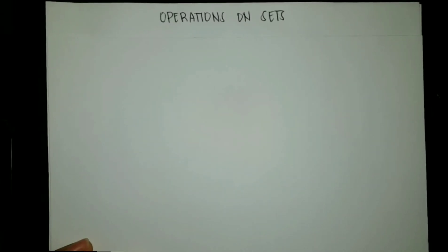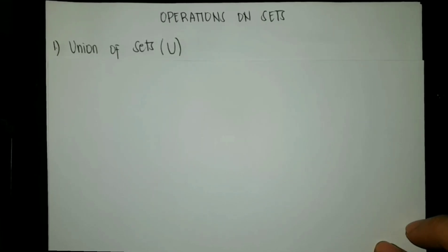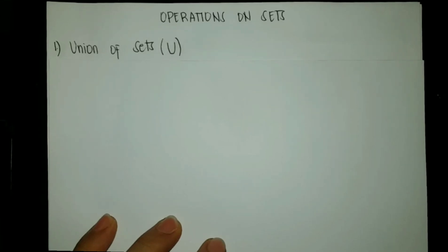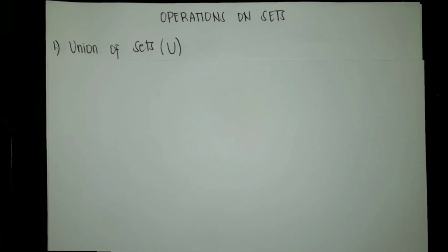On this video, I will teach you the operations on sets. Basically, we have four operations on sets. The first operation is the union of sets. Union of sets is the combination of the elements of the given sets such that no element must be repeated.